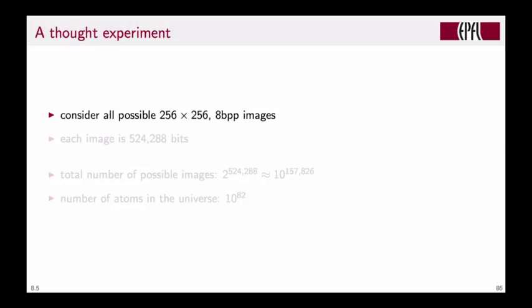Let's start with a simple thought experiment. Consider an image of size 256 by 256, encoded at 8 bits per pixel, requiring about 500,000 bits. From a combinatorial point of view, each bit can be set independently to 0 or 1. So the total number of possible images is 2 to the power of 524,288.